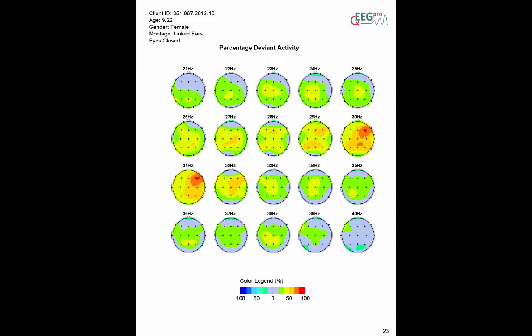In the current example, the percentage of the recording in which the power around 30 Hz at right frontal electrode sites is above 2.3 is relatively high.